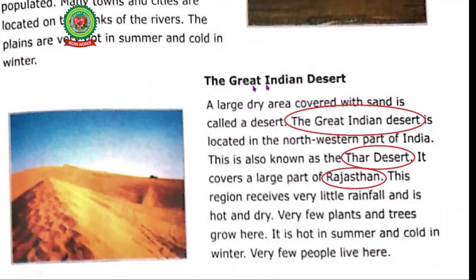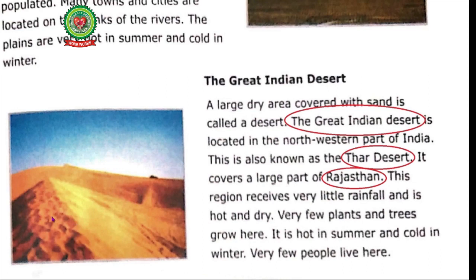The Great Indian Desert: A large dry area covered with sand is called a desert. The Great Indian Desert is located in the North Western part of India and is also known as the Thar Desert. It covers a large part of Rajasthan. In which part of India is the Great Indian Desert located? In the North West part of India. What is the other name of the Great Indian Desert? The Thar Desert. This region receives very little rainfall and is hot and dry. Very few plants and trees grow here. It is hot in summer and cold in winter, and very few people live here. Why do few people live in the Thar Desert? Very few people live in the Thar Desert as it is hot and dry and receives very little rainfall.